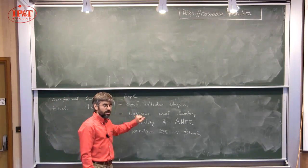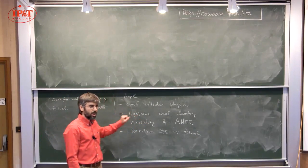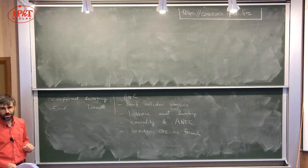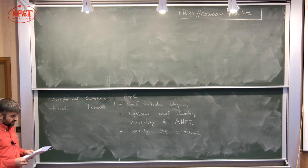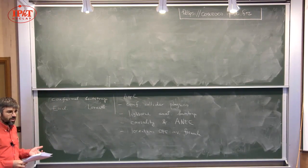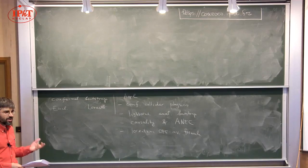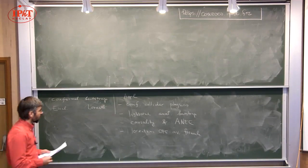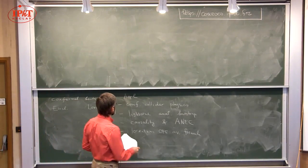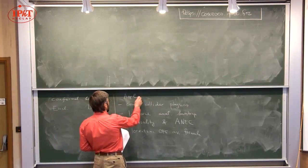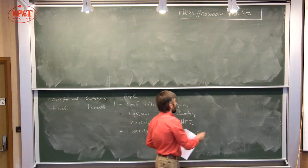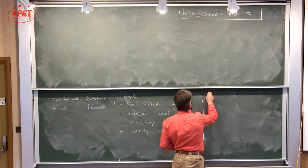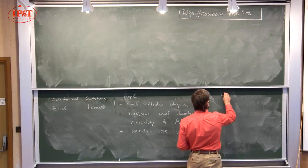If you take all these tools, which involve Lorentzian space, and apply them, you discover some very interesting things about Euclidean CFTs. This has always been puzzling to me — why is Lorentzian space so useful? That is the first question. And then there is a second question: why is this permitted?